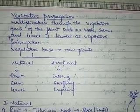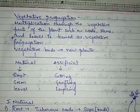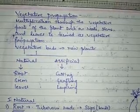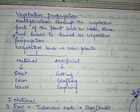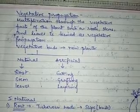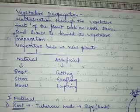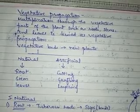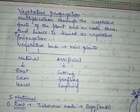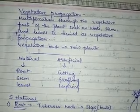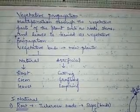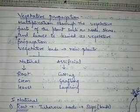In the previous video we started with the topic reproduction in plants and animals. We saw that reproduction is a process by which living organisms produce offspring of their own kind. The new organism that is produced will be similar to the parent organism. There are two modes of reproduction basically — the asexual and sexual modes of reproduction.